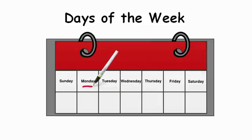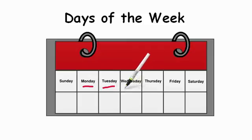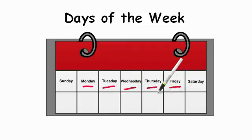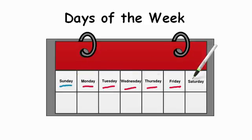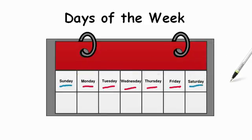Monday through Friday — Monday, Tuesday, Wednesday, Thursday, and Friday — are called the weekdays, the days where you're in school and your parents are at work. Whereas Sunday and Saturday are known as the weekend. Those are the days where you're not in school and your parents are usually off work as well.